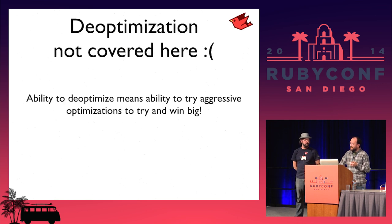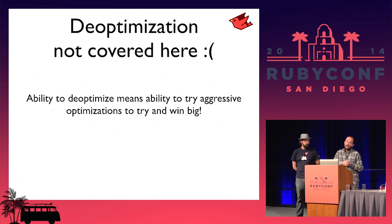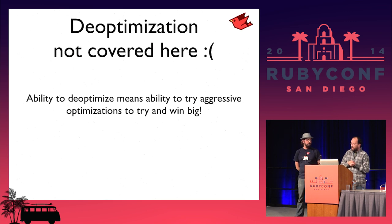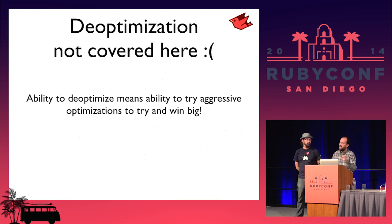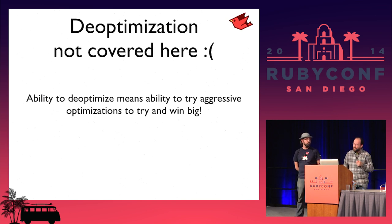Chris Seaton did a talk on de-optimizing JITs yesterday — you should be able to watch the video in a couple weeks. Basically, as long as you can de-optimize an optimization, you can try crazy optimizations that give you great speed. The worst case is losing a little time while trying, and you can fall back to a conservative optimization. That's how Hotspot gets really fast.